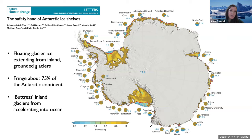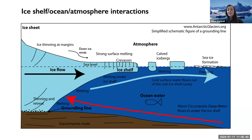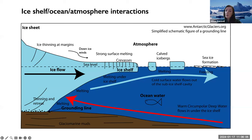Some ice shelves have already collapsed. Larsen A collapsed in the 1980s, and Larsen B collapsed in 2002, which I'll discuss more shortly. I'll also talk about George VI ice shelf, a banana-shaped ice shelf on the peninsula. When glacier ice meets the ocean it floats due to its lower density. The ice shelf is pinned to land at the grounding line, and both surface and basal melting contribute to ice shelf thinning. Basal melting from warm ocean temperatures is the dominant process, but I'll focus on surface melt.